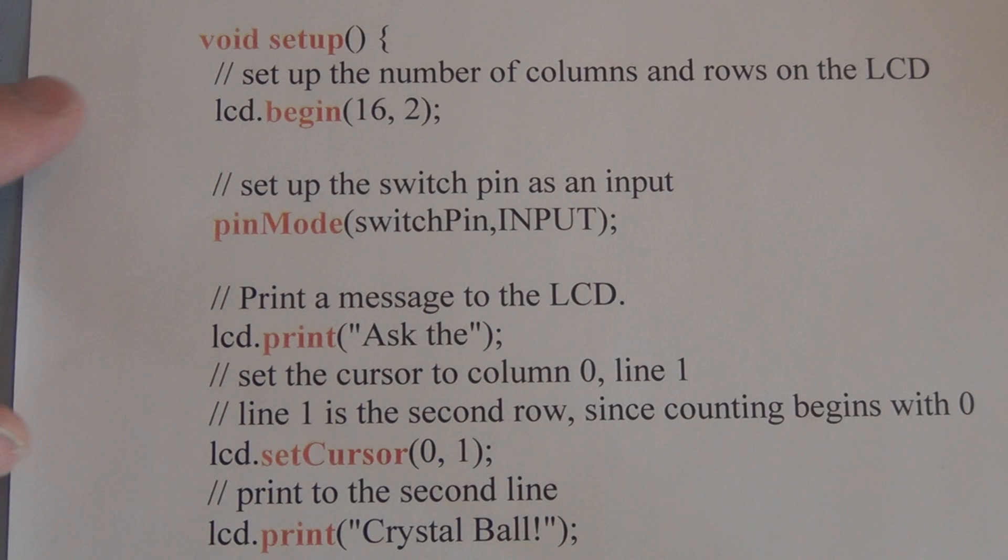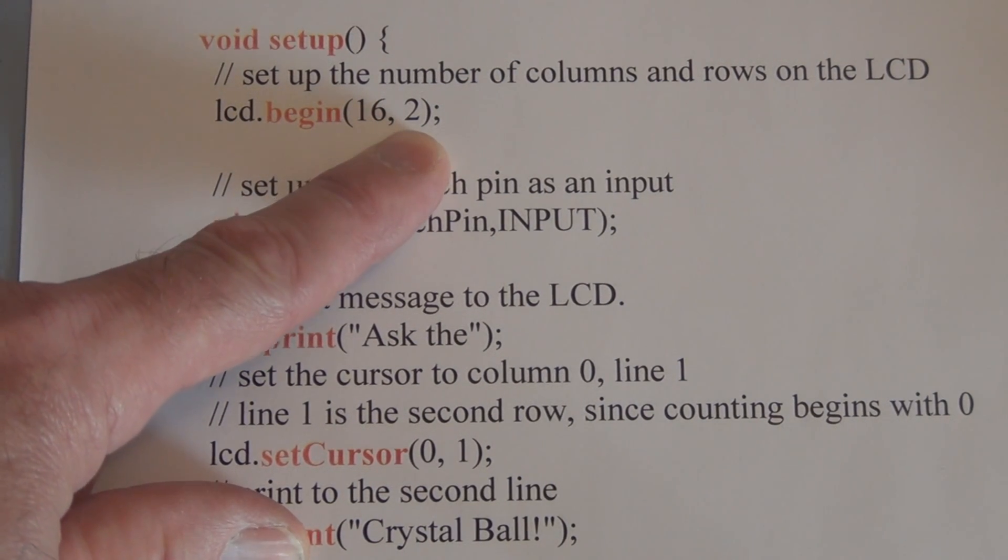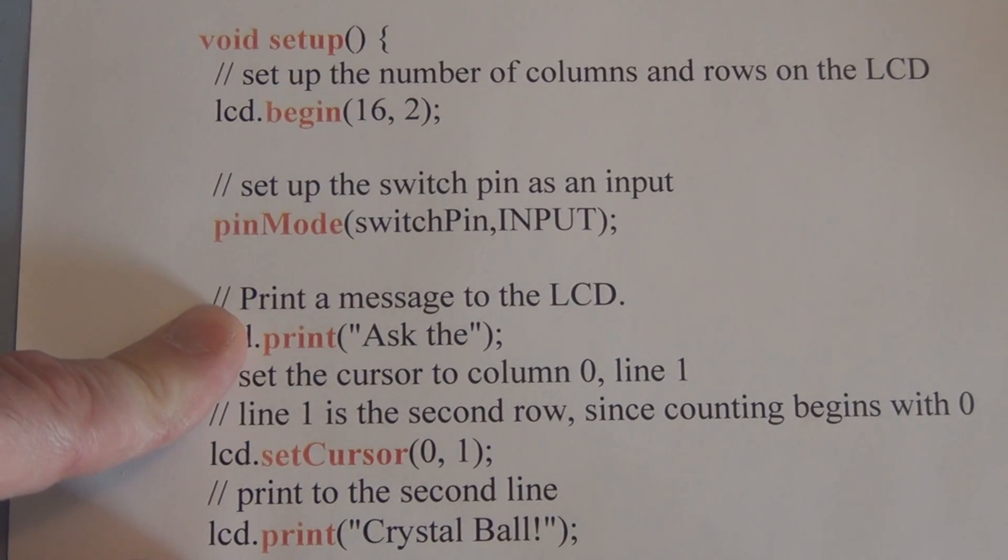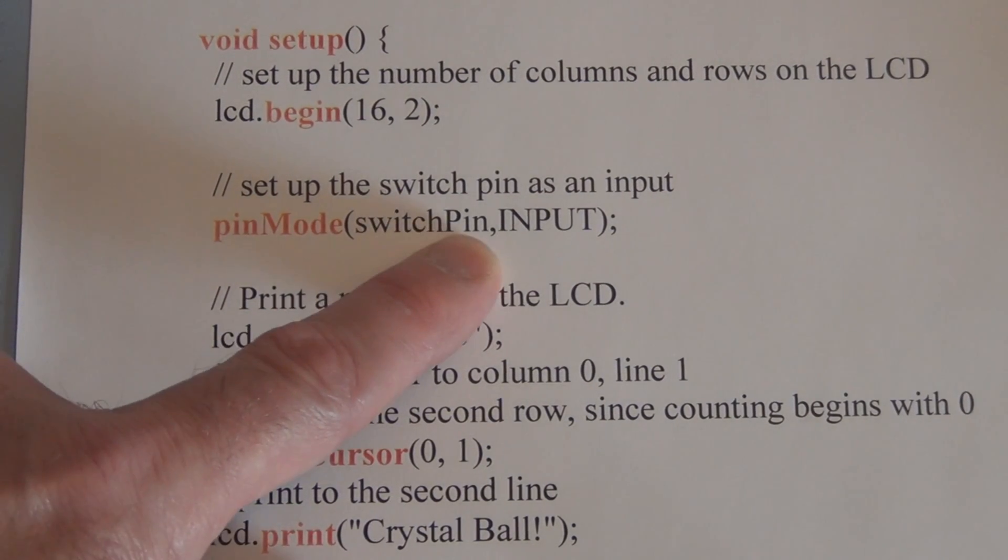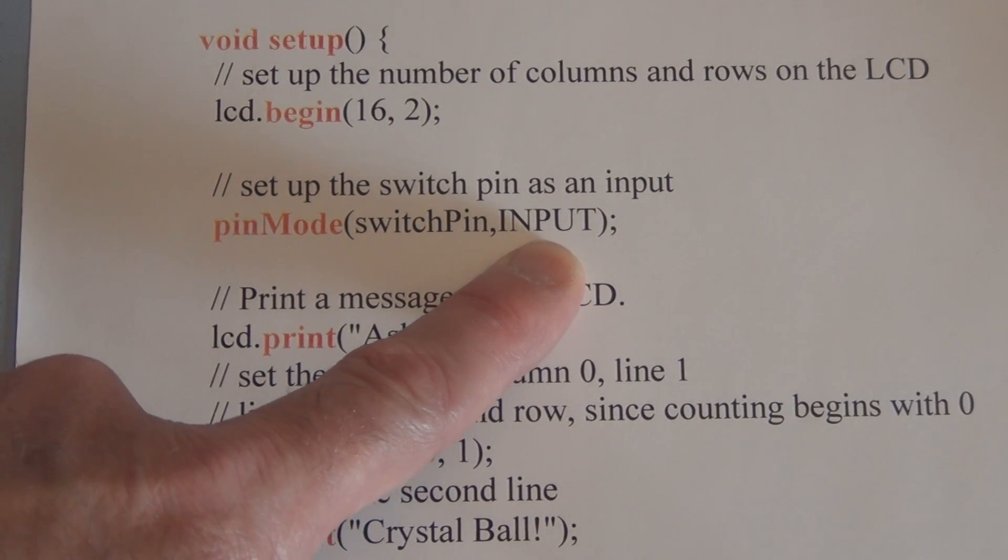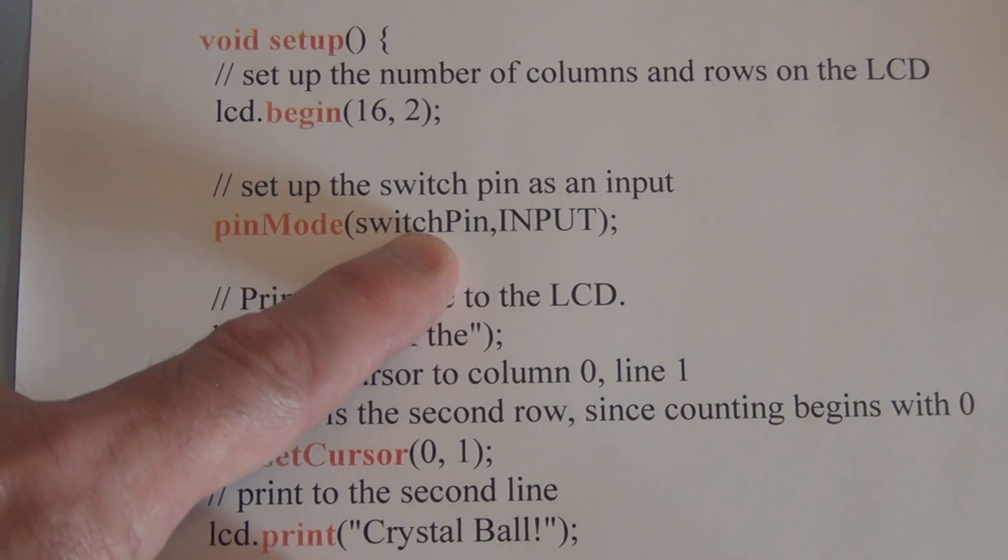Next, we start the setup function void setup. And we start the LCD library with lcd.begin, telling it that it's a 16 column by 2 row LCD display. So it knows where to put the characters as a reference. And we're going to set using pinMode, we're going to use switchPin as an input. We're declaring switchPin variable as an input. SwitchPin recall is pin 6.